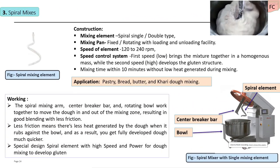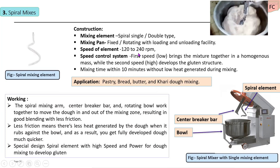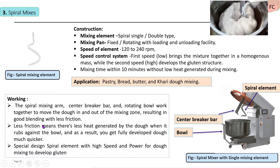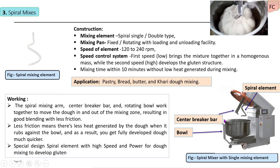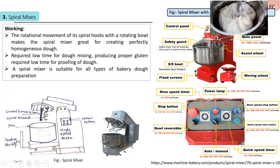The spiral mixer features a very low mixing time — approximately 10 to 15 minutes for dough preparation. Initially, low-speed mixing is used, followed by high-speed mixing to develop the gluten structure. Less heat is generated during the mixing operation. Chilled water is added during mixing to reduce heat generation and maintain the dough temperature. The mixing element and control fittings with low-speed and high-speed settings are visible in the image.